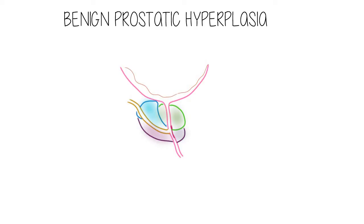As the name suggests, benign prostatic hyperplasia is a benign condition which affects the prostate gland. In this condition there occurs hyperplasia of the prostate gland, which means there will occur an increase in the number of cells of various components present within the prostate gland.